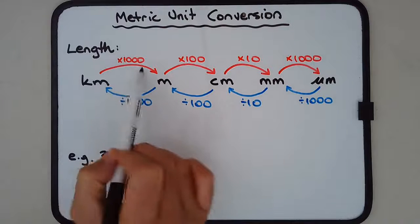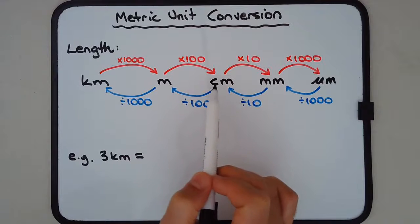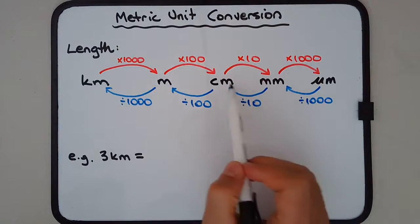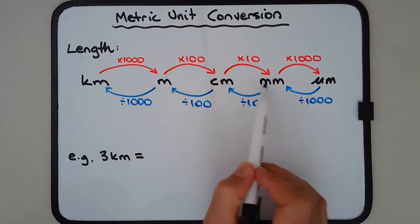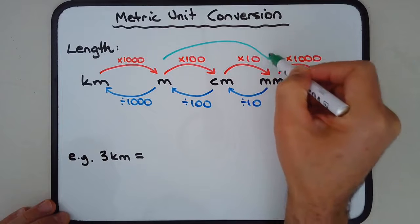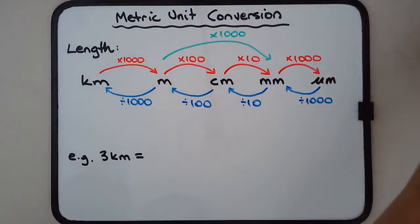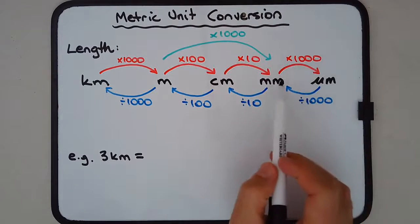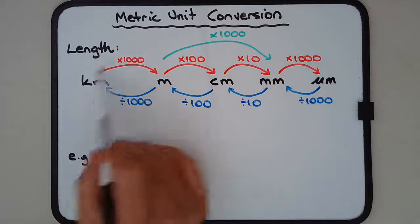Kilometers to meters: multiply by a thousand. Meters to centimeters: multiply by a hundred — after all, 'centi' implies 100, and it's no surprise that the Roman numeral for 100 is the letter C. Centimeters to millimeters: multiply by 10. Meters to millimeters is multiplication by a thousand, so you can put one more arrow going straight from meters to millimeters — times one thousand — to make some calculations easier. After all, 'milli' means a thousand.